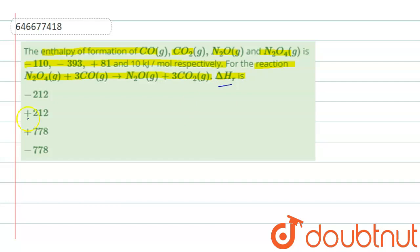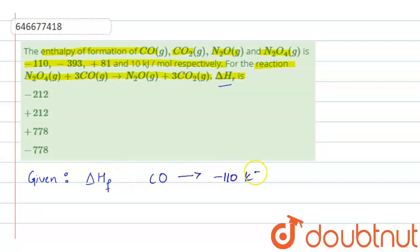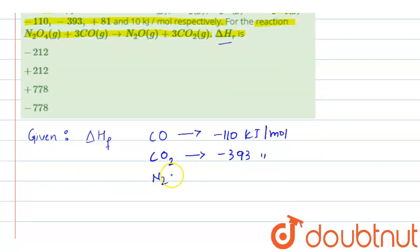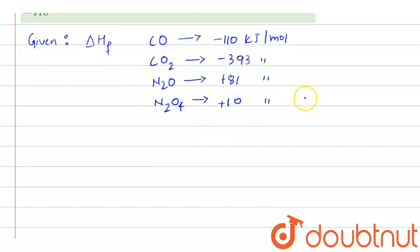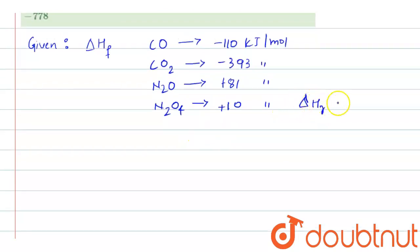First let us note down what quantities are being given. The enthalpy of formation is given: for carbon monoxide it is minus 110 kilojoules per mole; for carbon dioxide, minus 393 kilojoules per mole; for dinitrogen oxide it is plus 81 kilojoules per mole; and for dinitrogen tetroxide it is plus 10 kilojoules per mole. So enthalpy of formation is given and we have to find the enthalpy of the reaction.